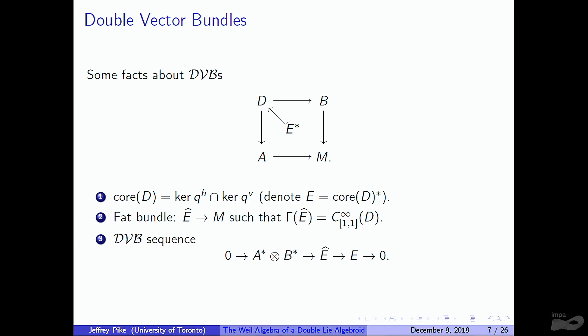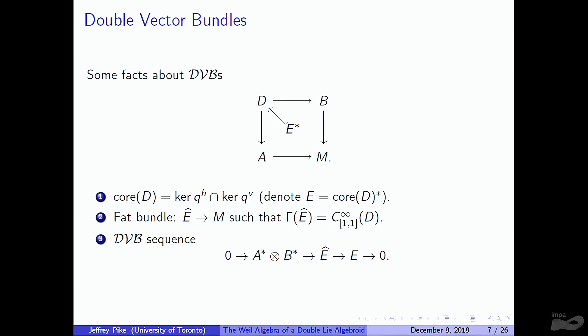The fat bundle gives rise to a DVB sequence. To understand this sequence at the level of sections: degree (1,1) means functions homogeneous of degree 1 in each structure — horizontally and vertically. A* can be thought of as functions homogeneous of degree 0 vertically and 1 horizontally, and B* as degree 0 horizontally and 1 vertically. Taking their product gives something of degree 1 in each structure. Any function of degree 1 in each direction on D restricts to the core to give a linear function on the core, which since the core is E*, means the sections are E.